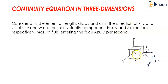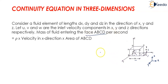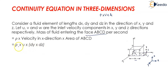Let u, v, and w be the inlet velocities in the x, y, and z directions respectively. The mass of fluid entering face ABCD per second equals the density times the velocity in the x-direction times the area of ABCD. So this becomes rho times u — where u is the inlet velocity — and the area of ABCD is dy times dz.